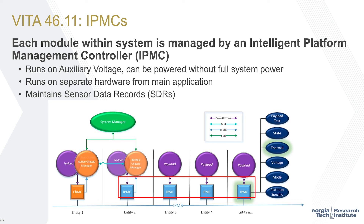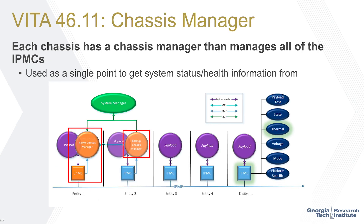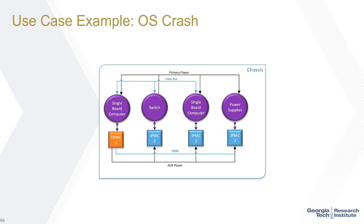At the module level, the entity is the IPMC — the Intelligent Platform Management Controller. It runs on auxiliary voltage, separate from the main processing components, on completely separate hardware. It maintains the health, status, and sensor data records for each module. The aggregator for the entire chassis is the Chassis Management Controller (CMC), which maintains data for the entire chassis and serves as a single point to get system health information. It communicates with all IPMCs, aggregates their data, and can command IPMCs — such as ordering a board reset.